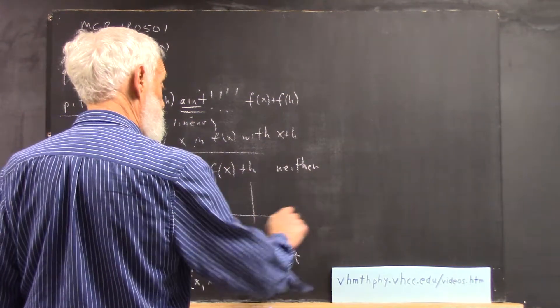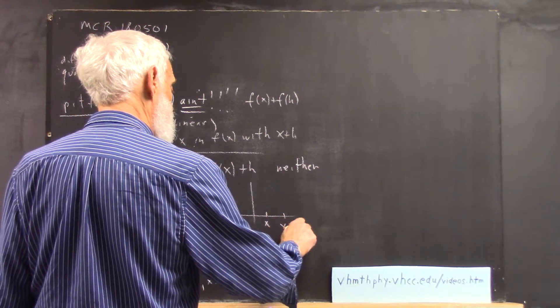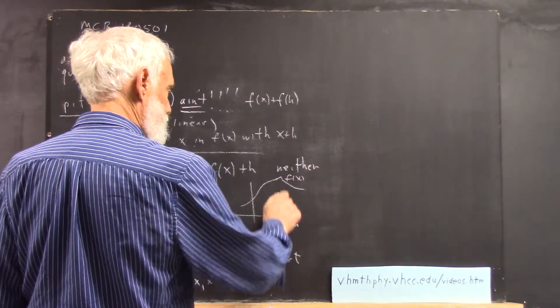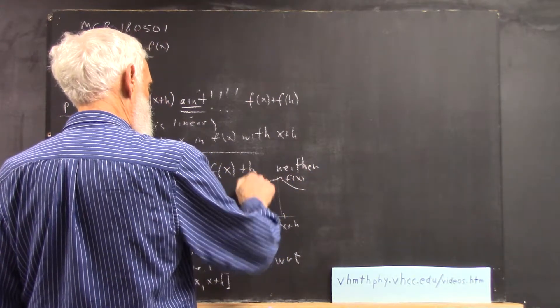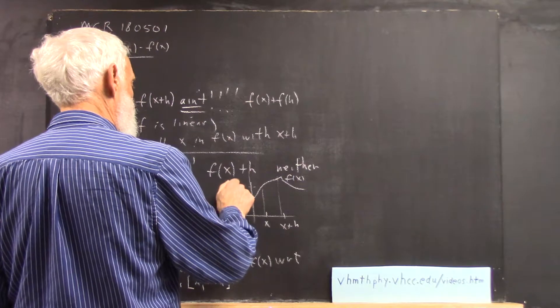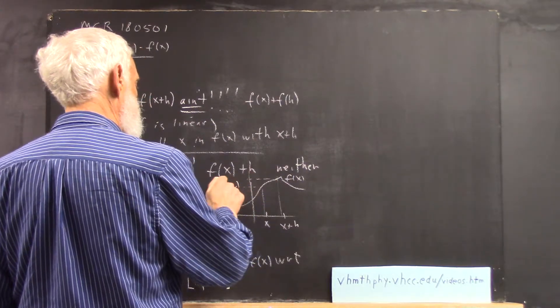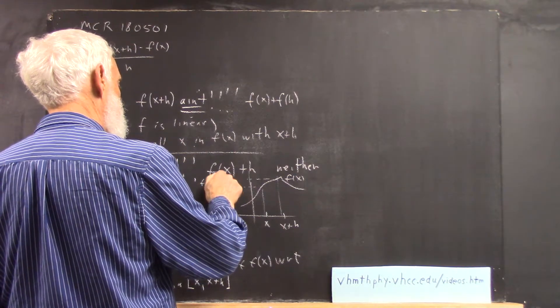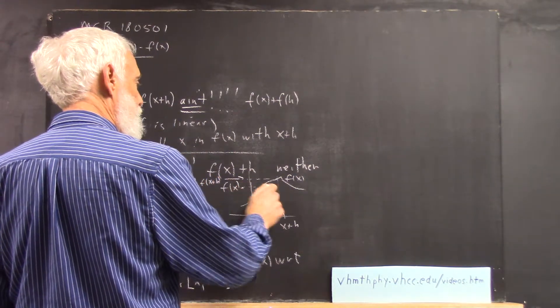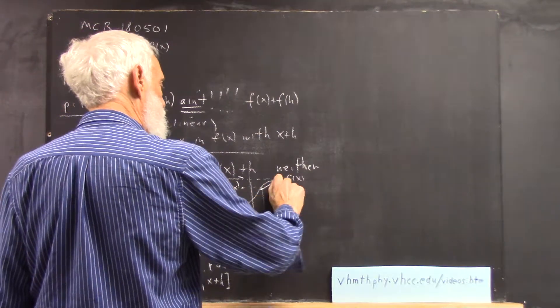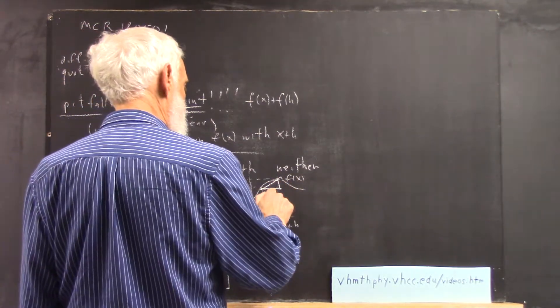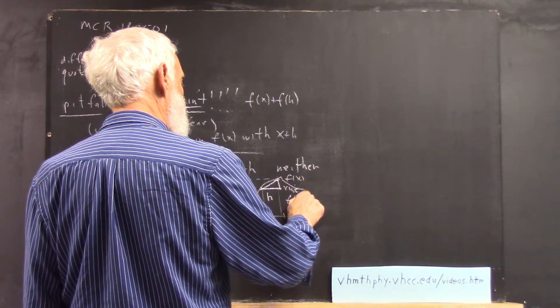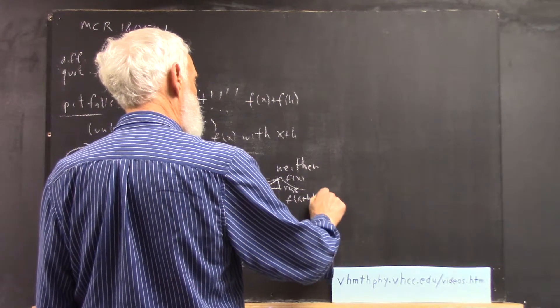Picture x, x plus h, f(x) graph. Here's f(x). Here, where I'm squeezing it in, is f(x+h). Here's your triangle. Here is your run, h. And your rise is f(x+h) minus f(x).